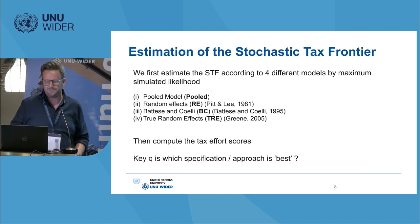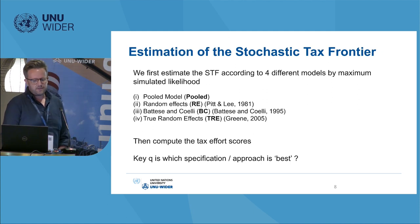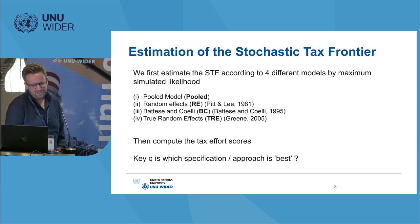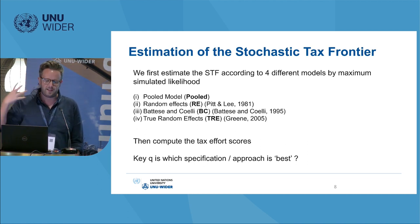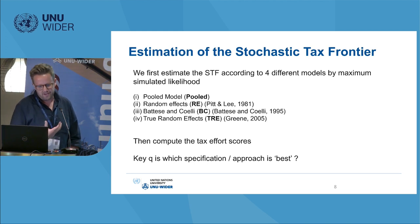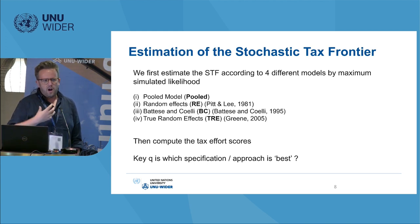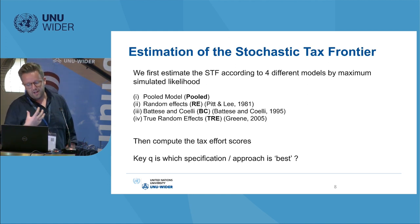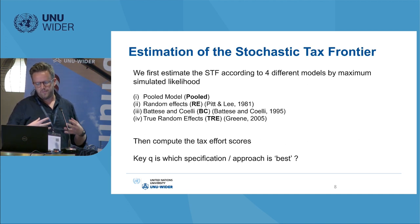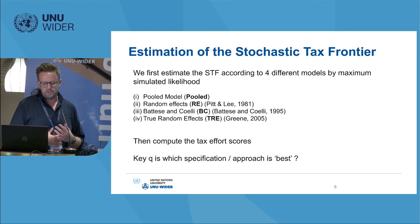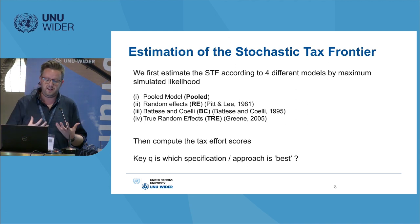We estimate the stochastic tax frontier — or rather, our co-author estimates it — according to four different models: the pooled model, random effects model, Battese-Coelli model, and the true random effects approach. Following this estimation we compute scores of tax effort. As far as we know, our paper was the first to employ the fourth methodology, the true random effects approach, and we think that represents an advancement in our understanding of how to estimate tax effort. The key question was: which is actually the best way to model this?